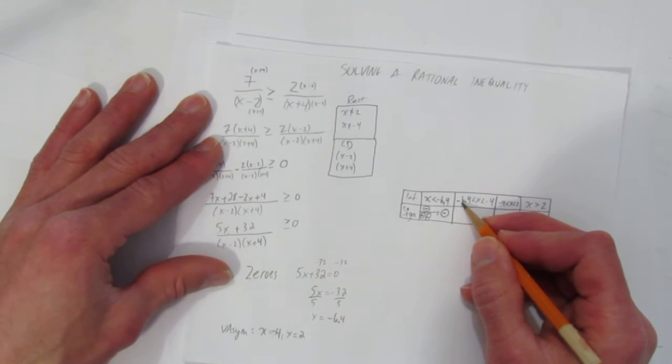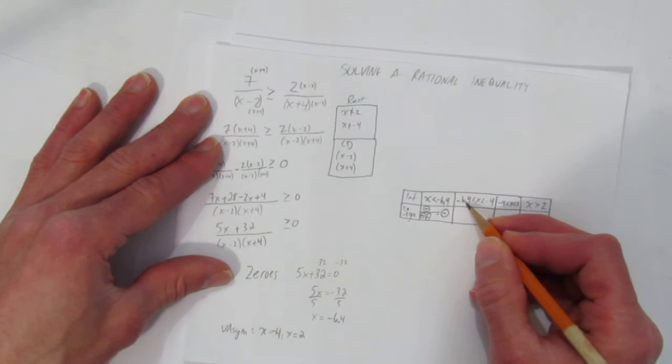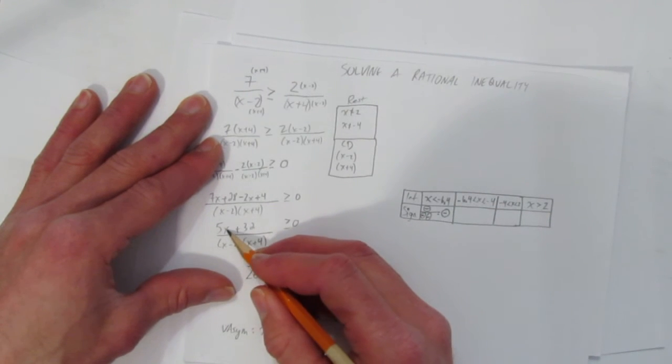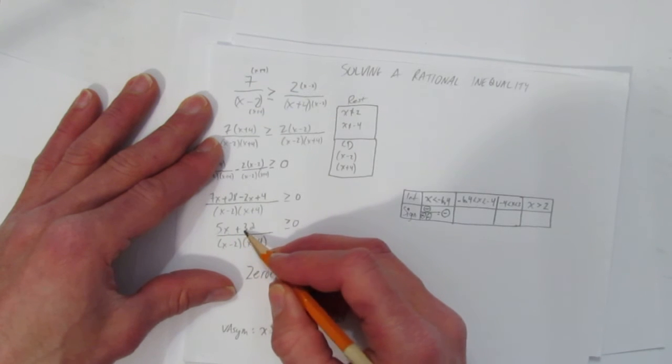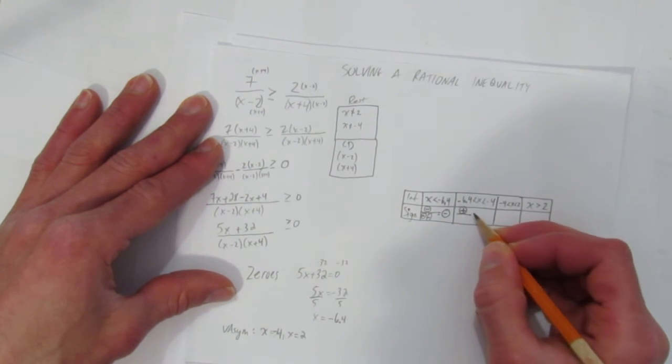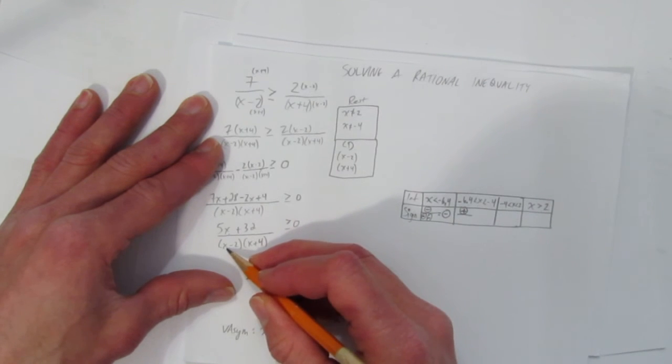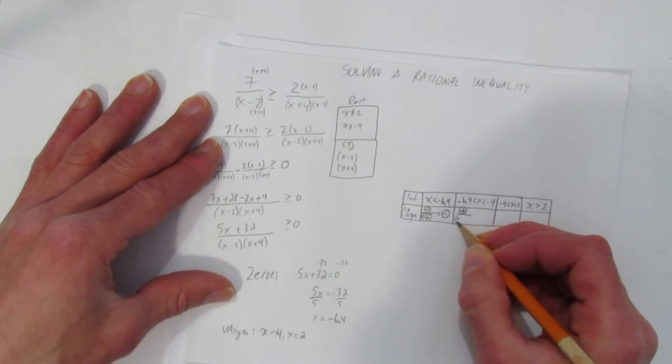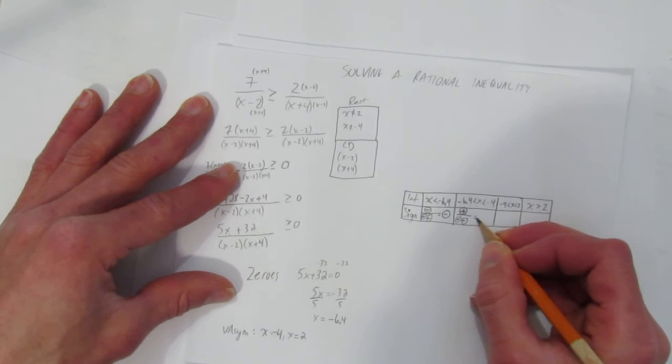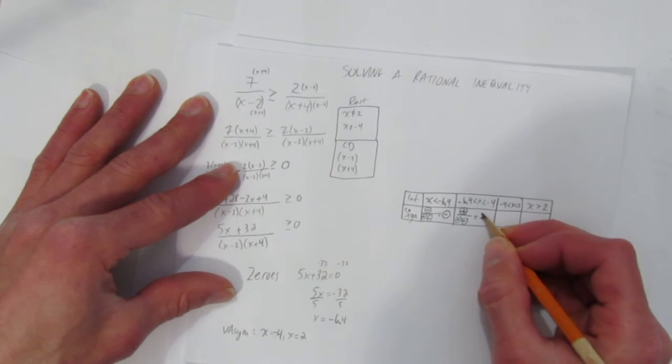Now we need to pick something between negative 6.4 and negative 4, so negative 6 or negative 5. So for example, if you put a negative 5 here, you'd get negative 25 plus 32, that would be positive over, a negative 5 here would make this negative, so that's negative, and a negative 5 here would still make that negative, but you'd get plus over minus times minus. Minus times minus is a plus, so you'd end up with a positive.